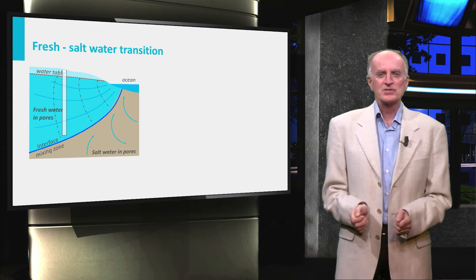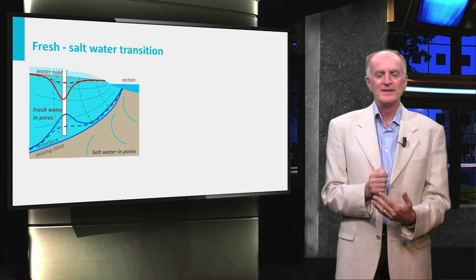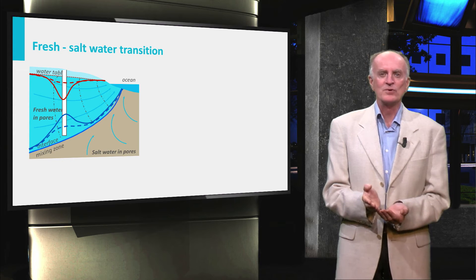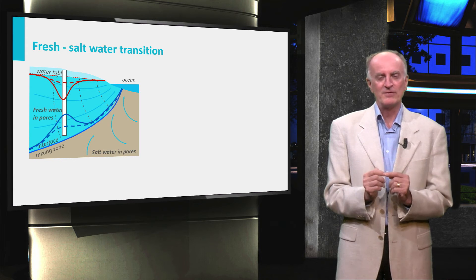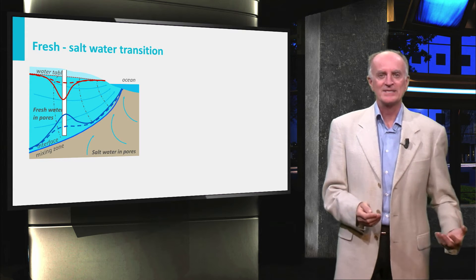If much more water is extracted than can flow into the aquifer, then the water table will descend, and maybe more importantly, the fresh-salt water transition will rise and eventually might reach the bottom of the wellbore. Salt water will start entering the well.